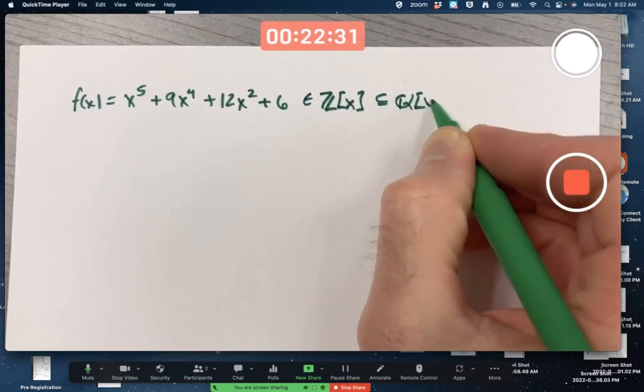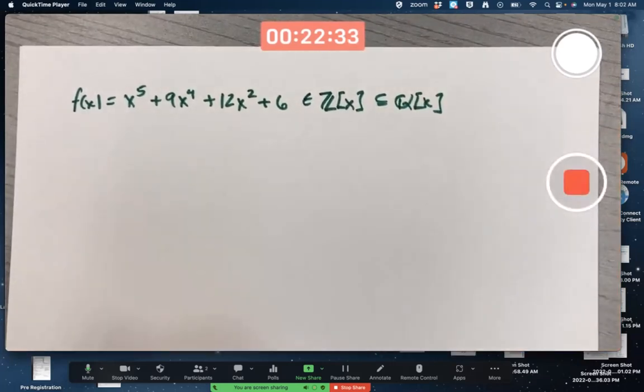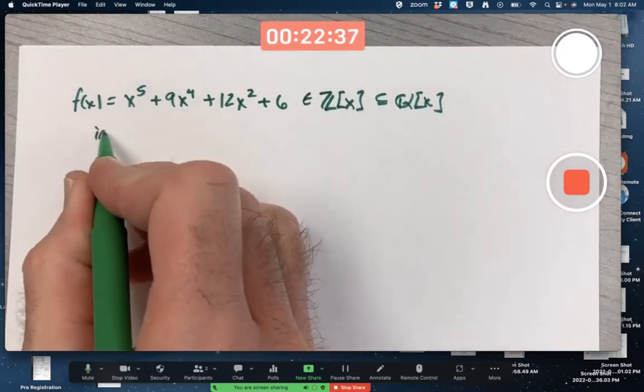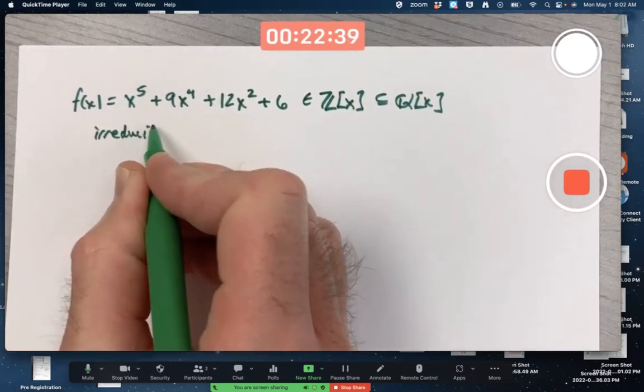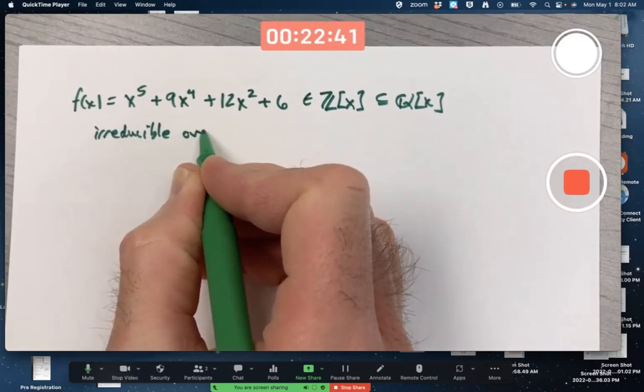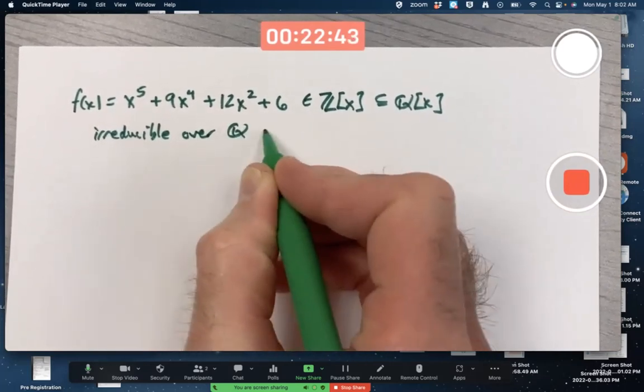And the question is, is this polynomial, this fifth-degree polynomial, irreducible over Q or not? Irreducible over the rationals or not?